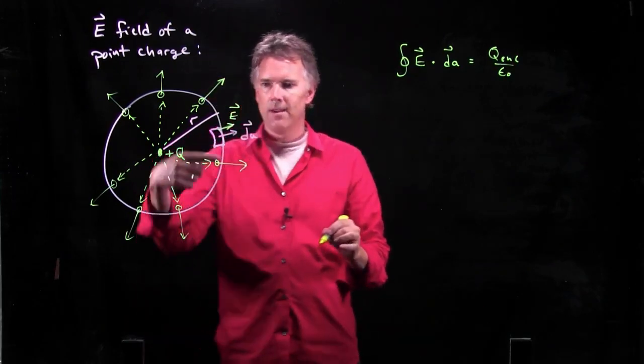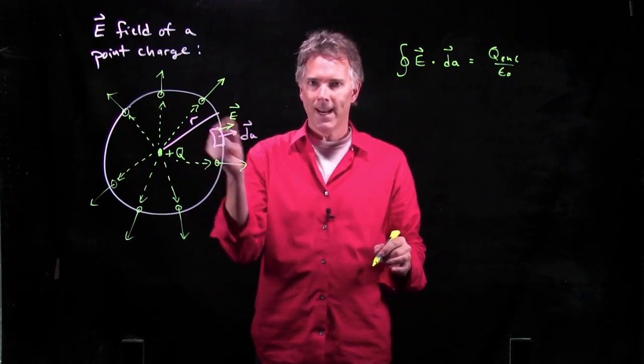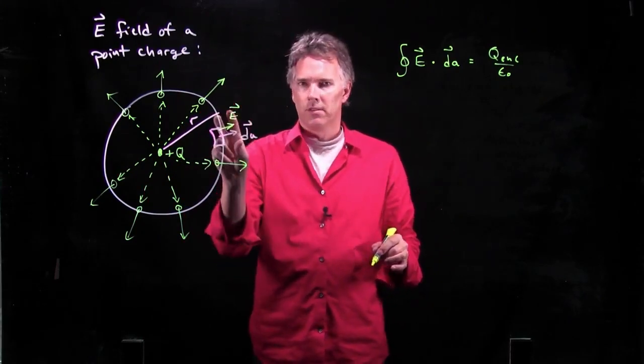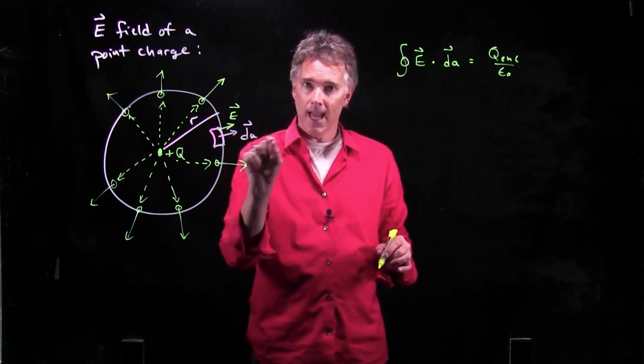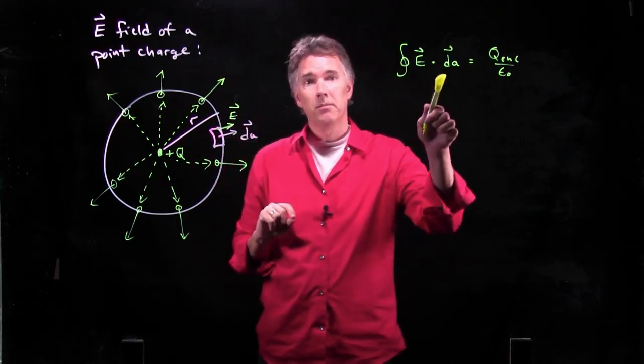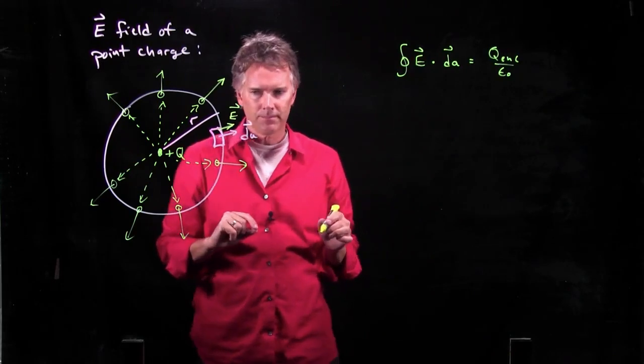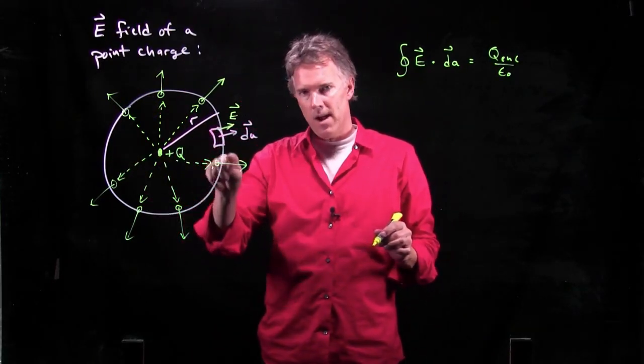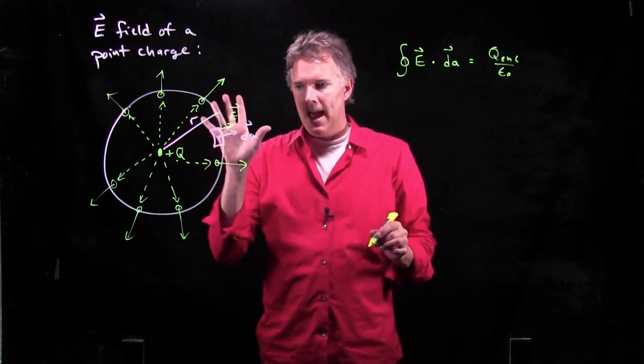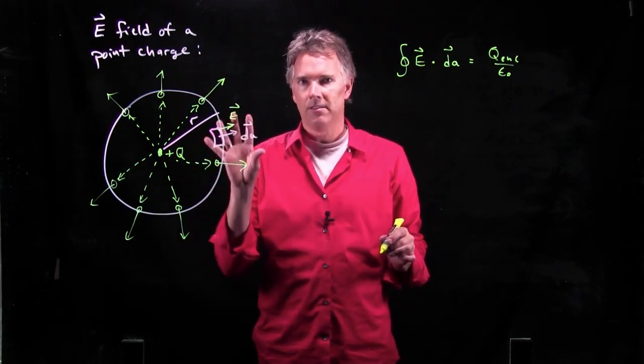Because we know that E is also pointing out. Right? Everywhere E field is pointing radially outward, we can say E has a radial component that's exactly parallel to dA. And that's going to simplify this quite a bit.